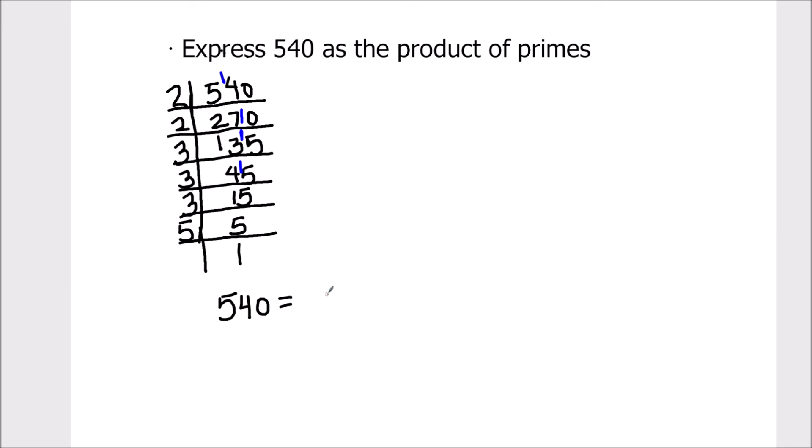All the numbers which are on the left hand side of the ladder are the prime factors of 540, which equals 2 times 2 times 3 times 3 times 3 times 5. These are all the prime factors of 540.